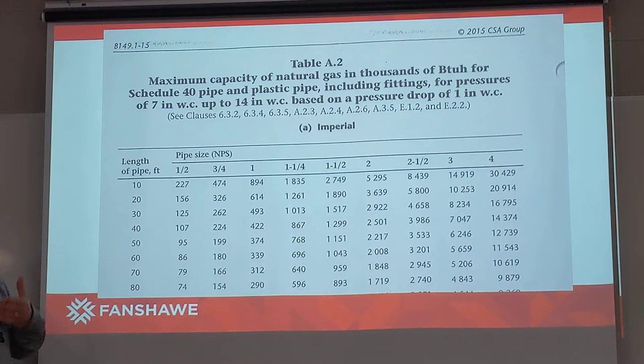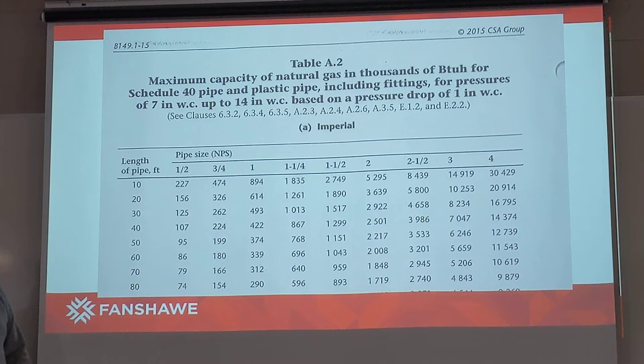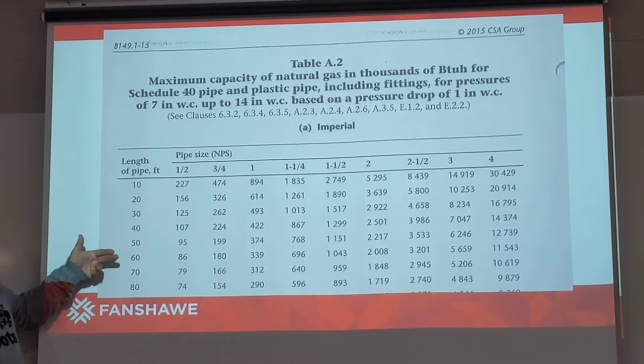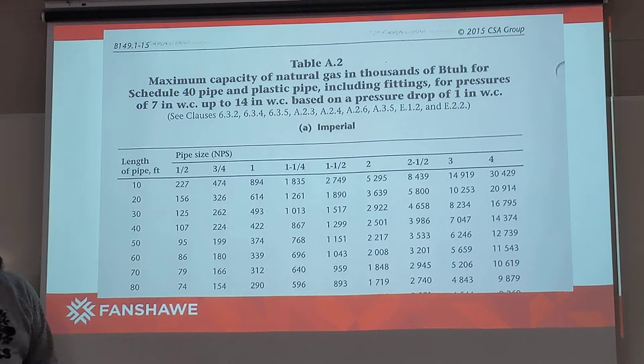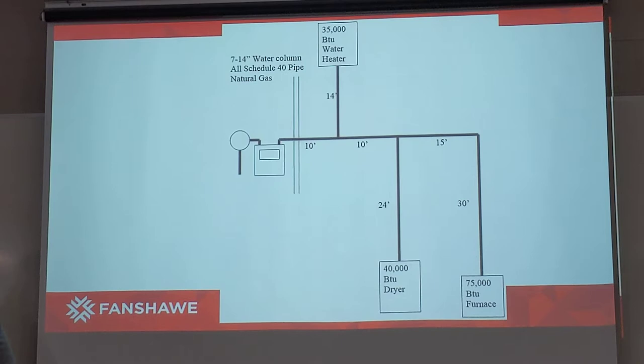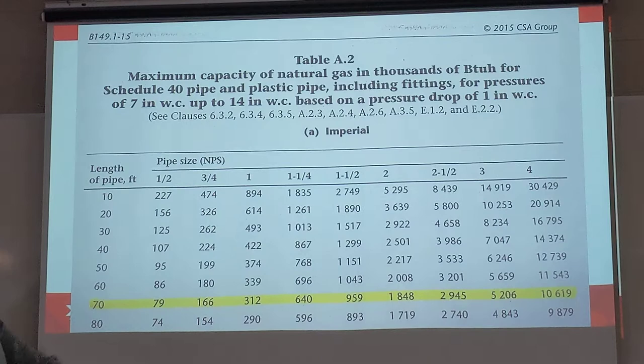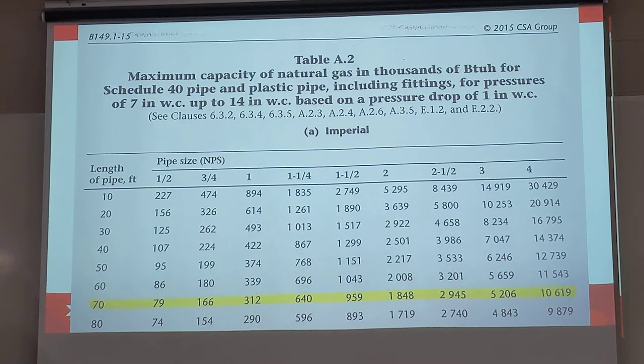Even if we were at 61 feet, we would still go to 70 feet. The only time we go back to the shorter run is when that number lands exactly on or is less than that value. So 61, 62, 63, 68, 69 feet — it doesn't matter, it all goes to the 70-foot code zone. Because we're using the 70-foot code zone, which already contains our longest measured run, I've highlighted the 70-foot code zone, and we'll start sizing at the furnace first.